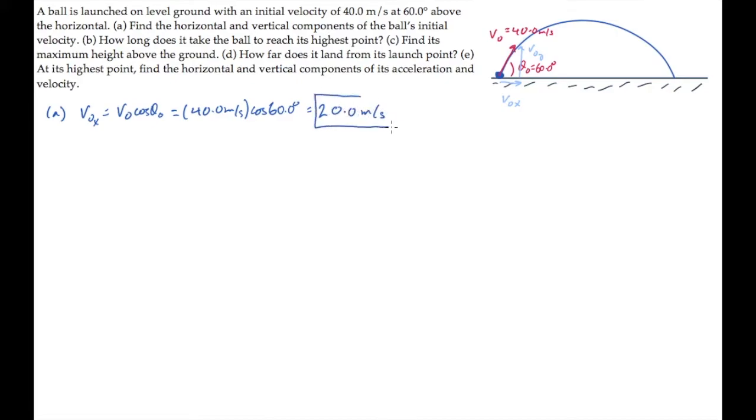The initial y component of velocity is the launch speed times sine of the launch angle. That gives 34.6 meters per second.